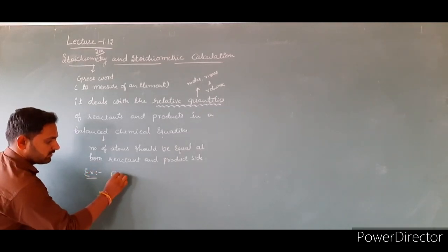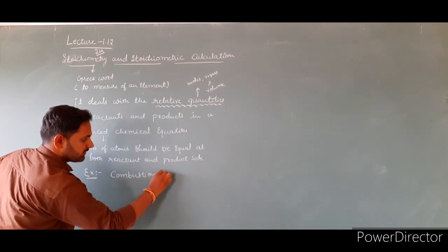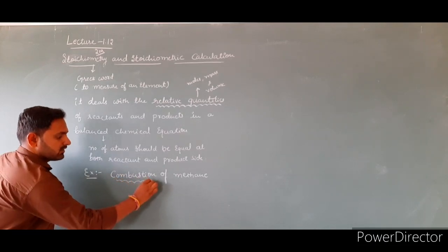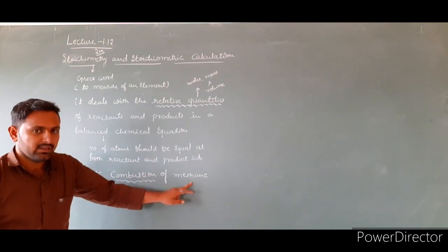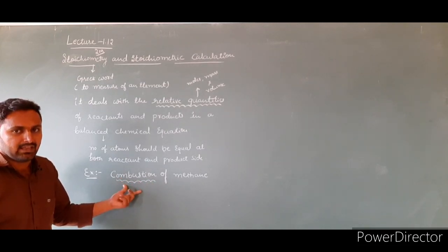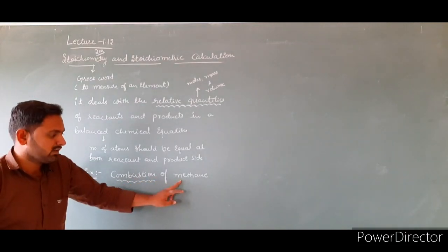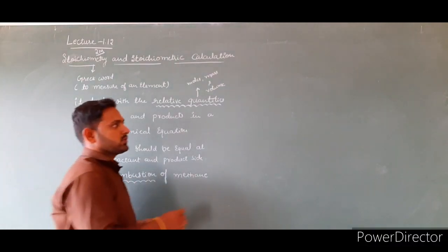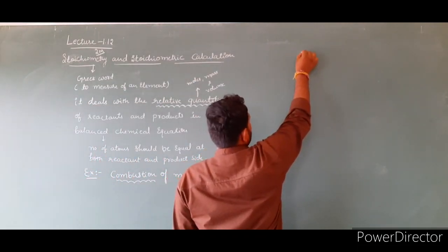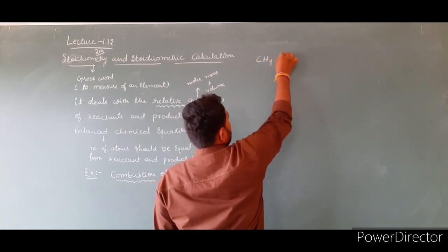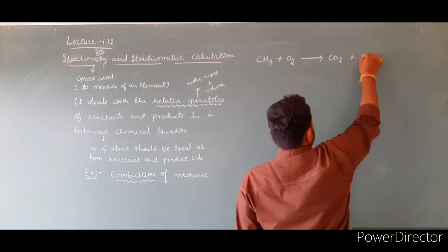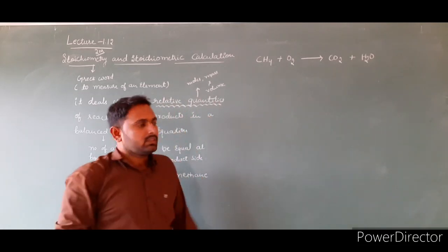Example: combustion of methane. What is the meaning of combustion? Combustion means burning in the presence of excess air. The chemical formula of methane is CH4. When methane is burned in the presence of excess oxygen, it gives carbon dioxide and water. These two are the products; methane and oxygen are the reactants.